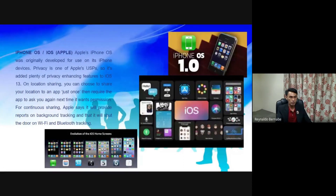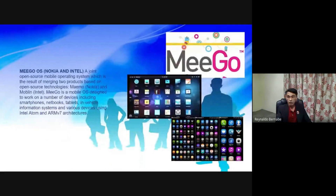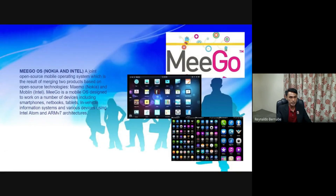MeeGo OS is a joint open source mobile operating system, which is the result of merging two products based on open source technologies: MeeGo and Moblin. MeeGo is a mobile OS designed to work on a number of devices including smartphones, netbooks, tablets, in-vehicle information systems, and various devices using Intel Atom and ARM version 7 architectures.